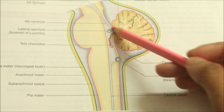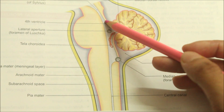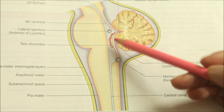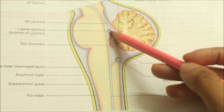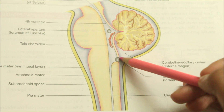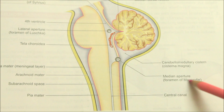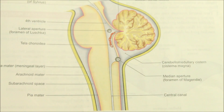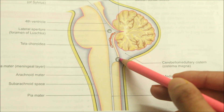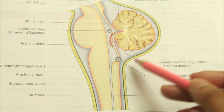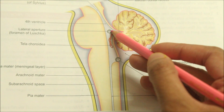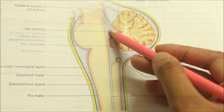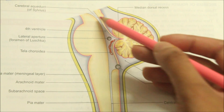In the caudal part of the roof of the fourth ventricle there are three openings: one median and two lateral. The median aperture of the fourth ventricle is called the foramen of Magendie. It is a large opening situated caudal to the nodule, providing the principal communication between the ventricular system and the subarachnoid space. The two lateral apertures are also known as the foramina of Luschka, situated at the ends of the lateral recesses.